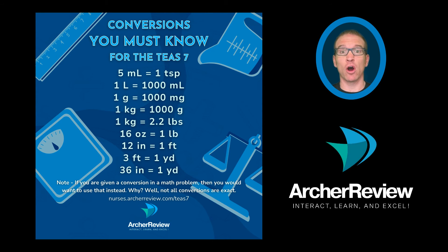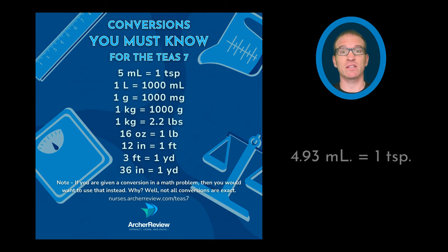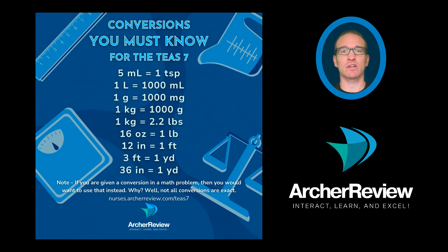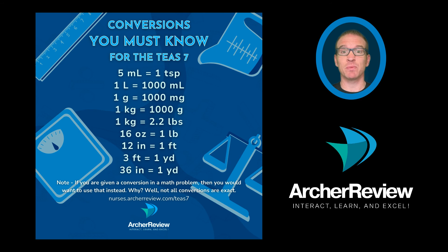If you are given a conversion in your problem, you would definitely want to use that instead. For example, 4.93 milliliters is actually closer to one teaspoon, which is approximately five milliliters. The five milliliters equals one teaspoon is what is used in the nursing field, but technically 4.93 milliliters equals one teaspoon. So if you're ever given a conversion in your problem, make sure to use that to ensure you get the correct answer, especially when rounding to a certain decimal place value.